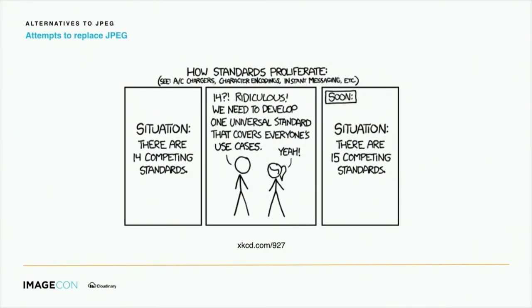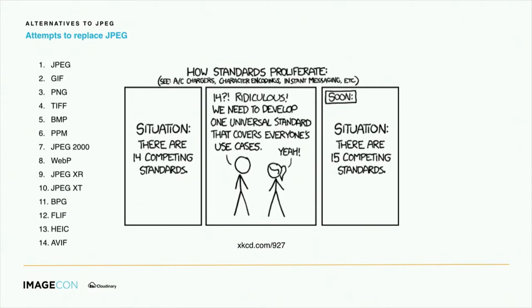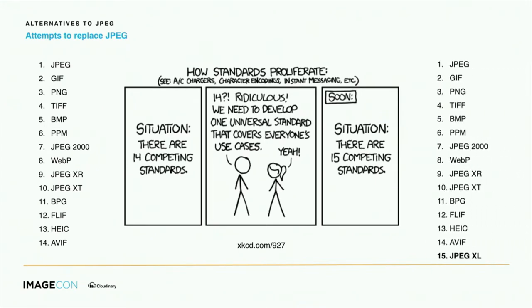So each of them still has some problems. We are in this situation — there's an XKCD comic that is very important to me — about how we have 14 competing standards and someone makes a new one to unify them all and ends up with 15. And this thing was basically made for image formats, because there are currently 14 competing image formats, and we will hopefully soon have a situation where we have 15.